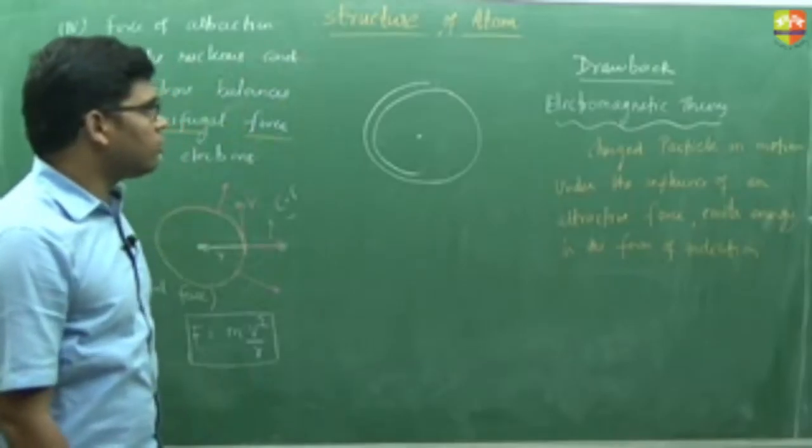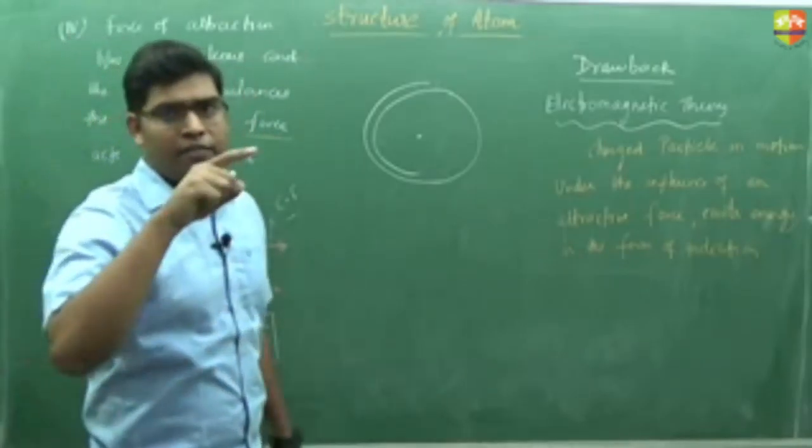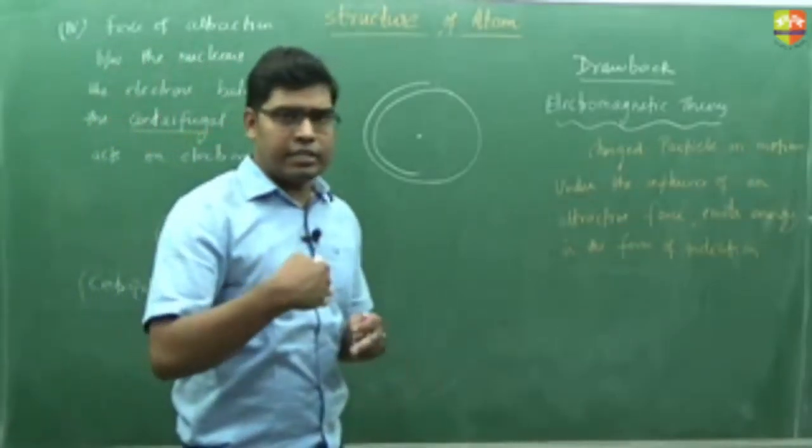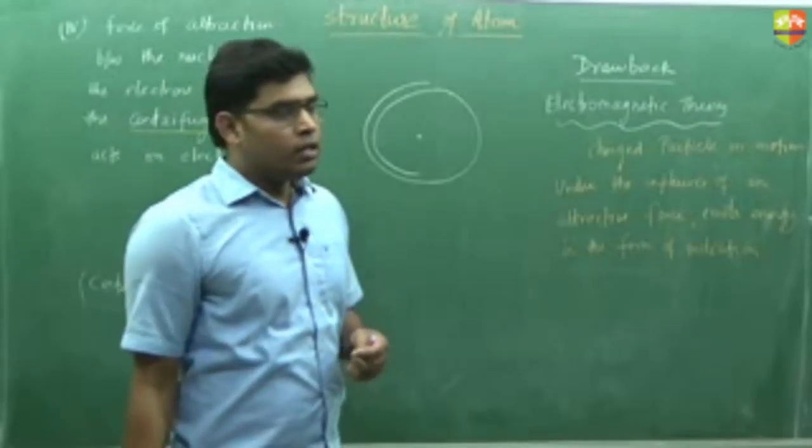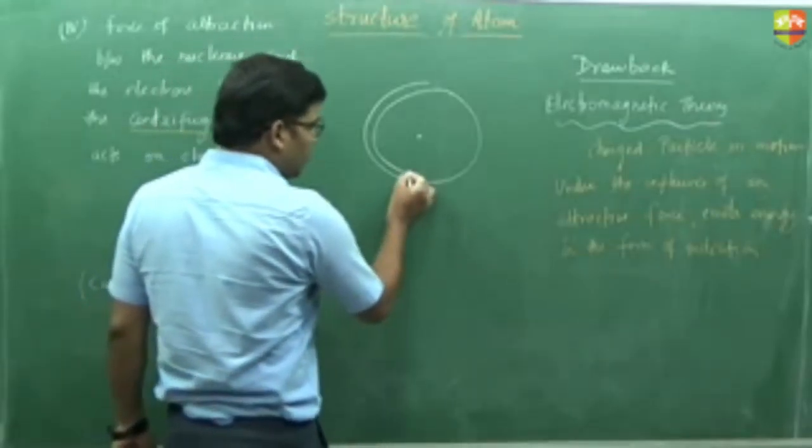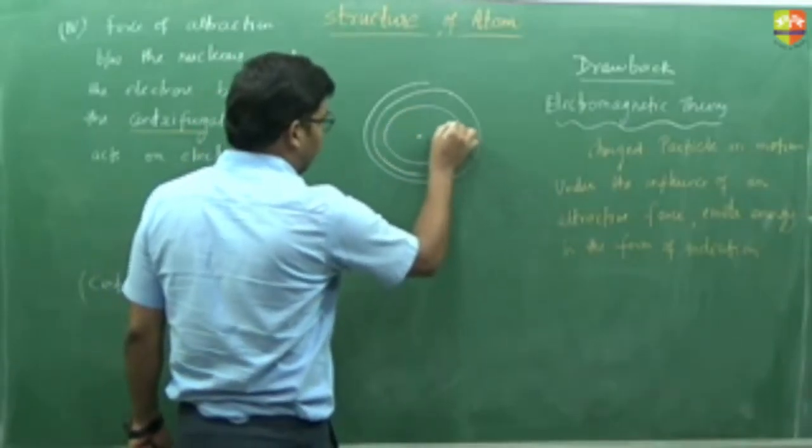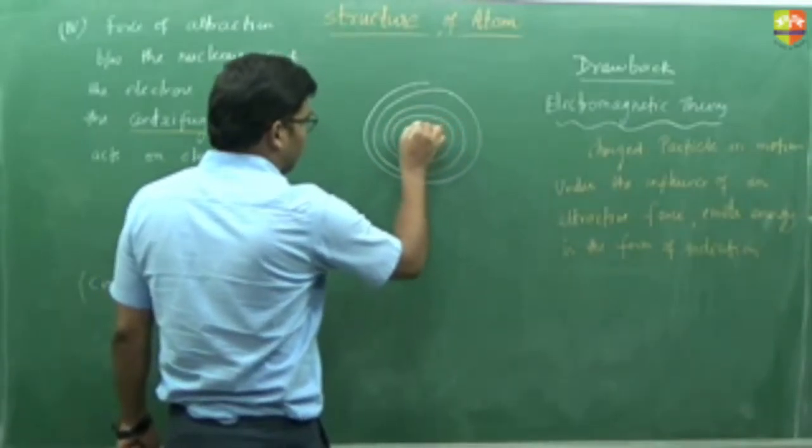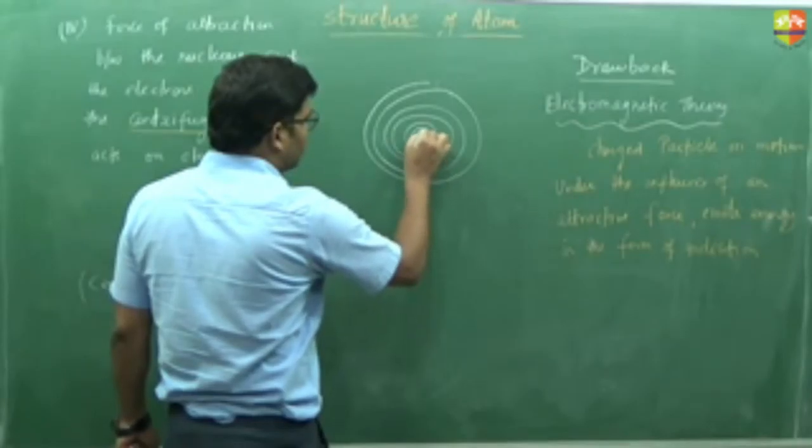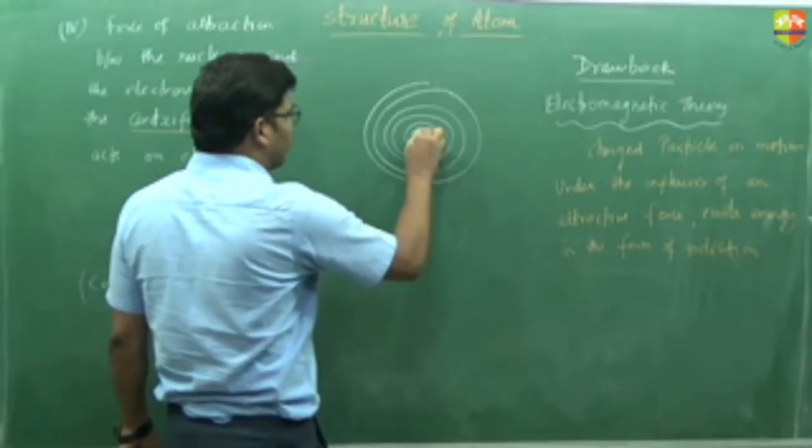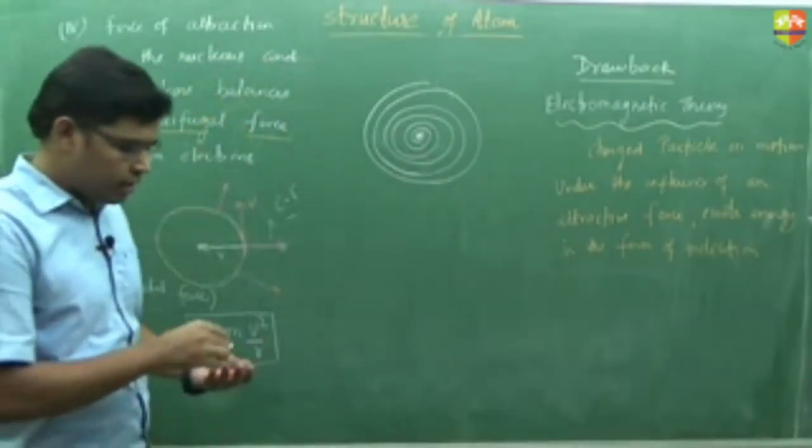That's why the same path it won't follow in every turn and it has to change its path, lighting like this. And it will follow a spiral path and finally it should fall down into the nucleus. So like this the electron is moving in every path.